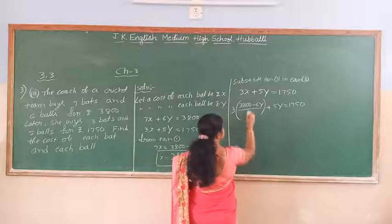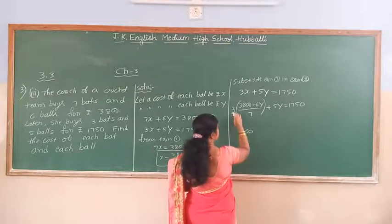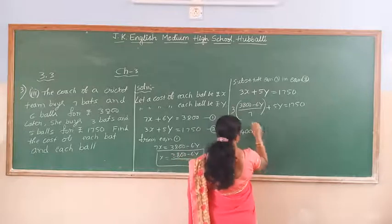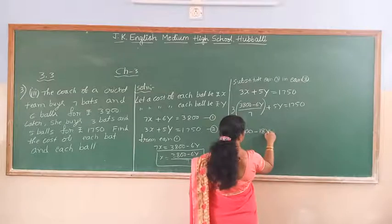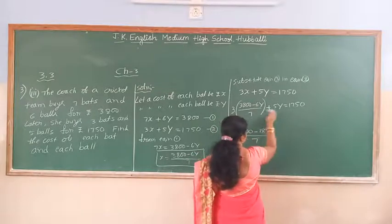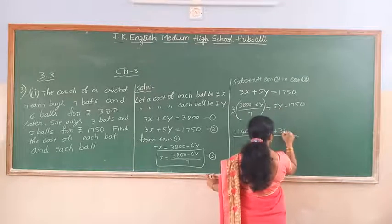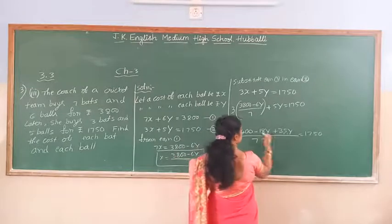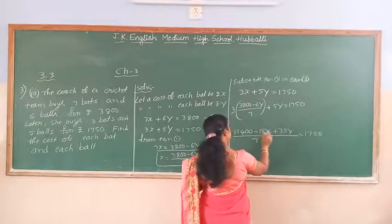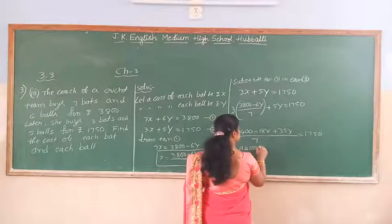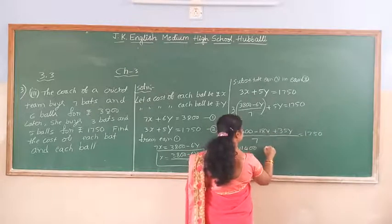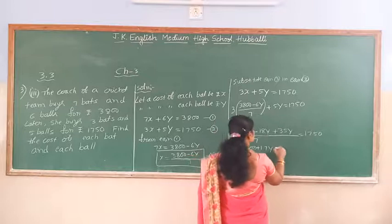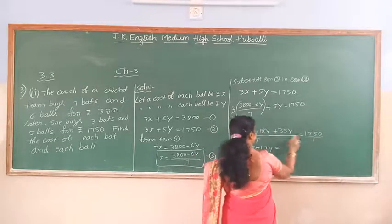So I am going to write equation 2 now. 3X plus 5Y equals 1,750. So if I substitute the value of X as 3,800 minus 6Y divided by 7 plus 5Y equals 1,750. Now I have to do the fraction multiplication. 3 times 8 is 24, 3 times 3 is 9 plus 2 is 11, so 11,400. Then minus 3 times 6 is 18Y. So if I take the LCM, the denominator becomes 7.